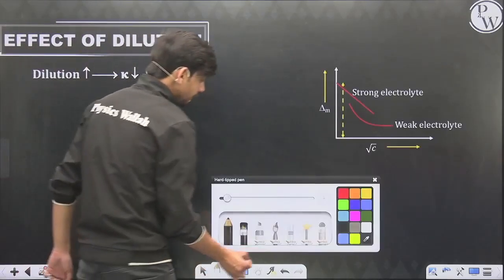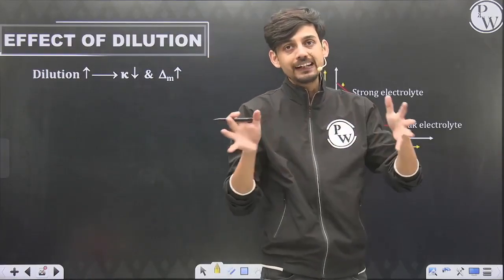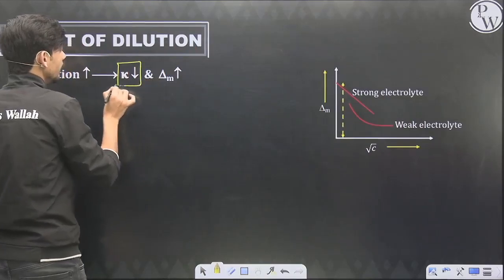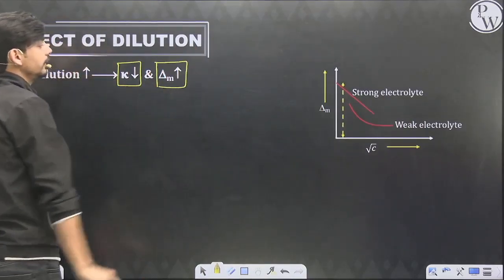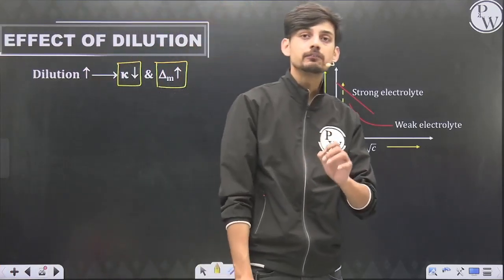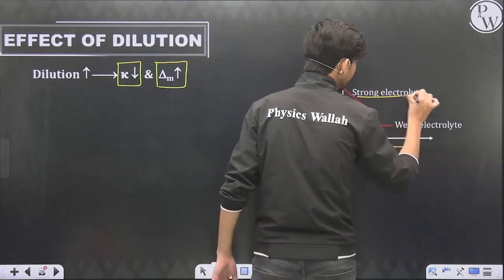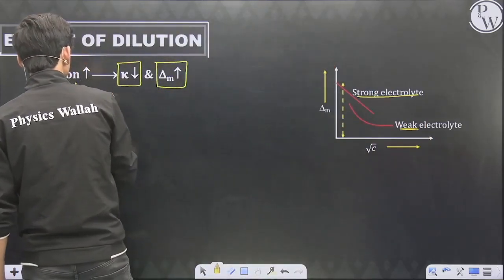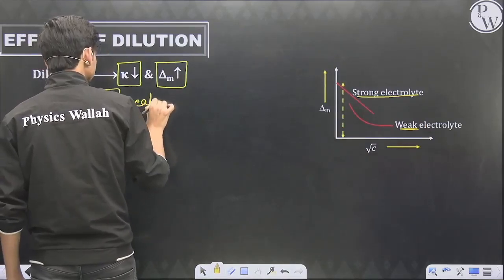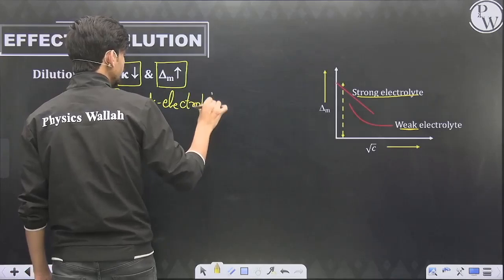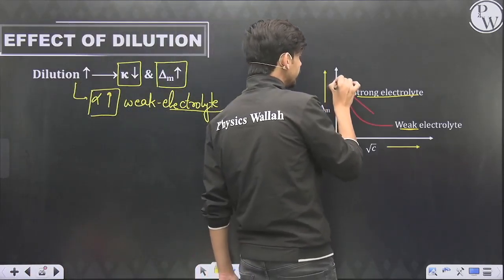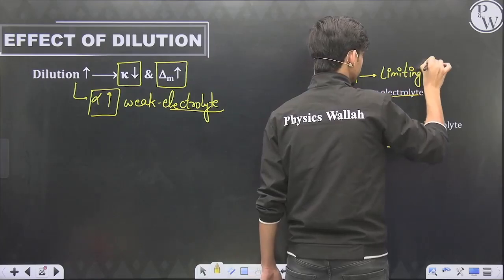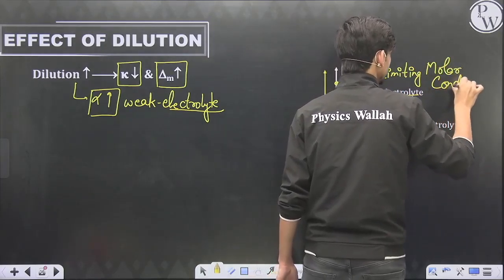On increasing dilution, ions get separated, volume increases, and conductivity (κ) decreases. But conductivity per unit mole (molar conductivity, Λm) increases. For a strong electrolyte the increase is linear, but for a weak electrolyte, increasing dilution also increases the degree of dissociation (alpha), so the increase is non-linear. At infinite dilution, dilution is maximum and conductivity is maximum — this is known as limiting molar conductivity.